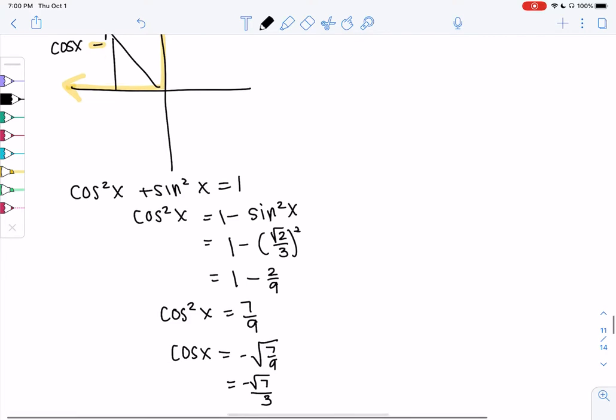So if we were to draw this triangle, it would be negative root 7 over 3 on the bottom and root 2 over 3 for the vertical, for the y.